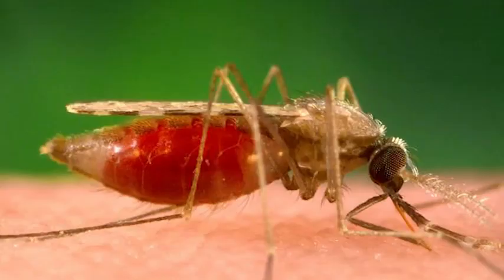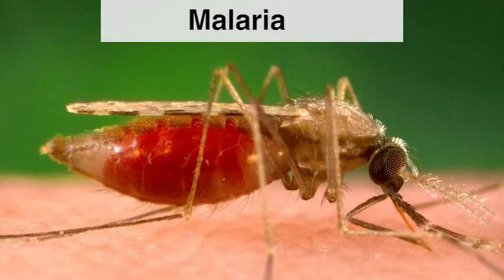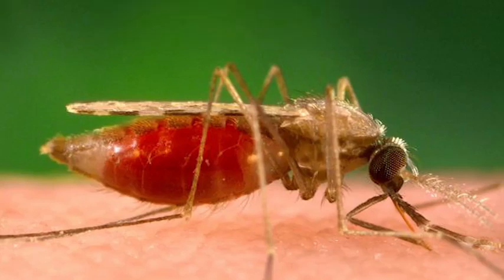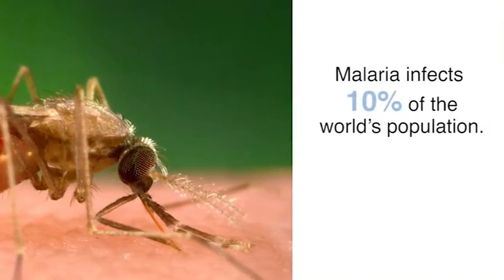Now we will see four examples illustrating the terms prevalence, risk, rates, and odds. Let's start with the first measure of health outcome occurrence: prevalence. Malaria is a mosquito-borne infectious disease of humans and other animals caused by parasitic protozoa. Malaria infects 10% of the world's population, and this statistic about malaria is an example of a prevalence.